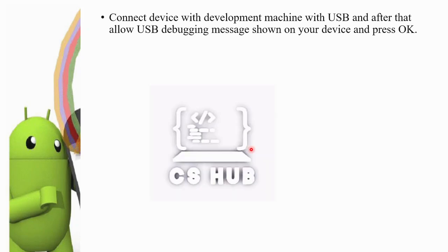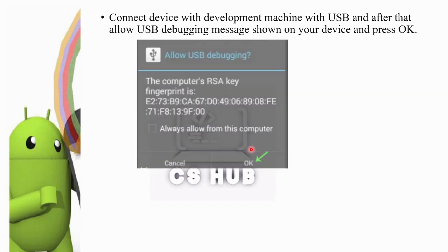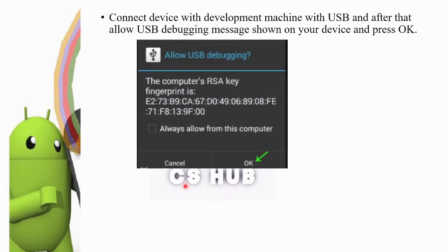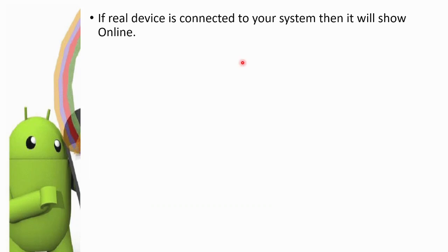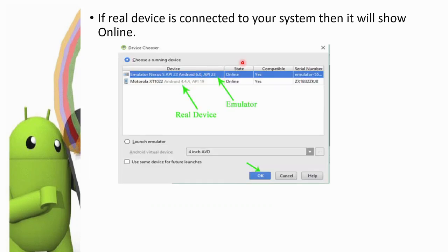Connect the mobile via USB cable to the computer. A warning message will appear — click OK to allow USB Debugging. Then go to Run > Run App. You can select the emulator or the real device. Select the real device and press OK to run the app.